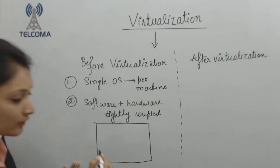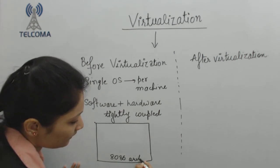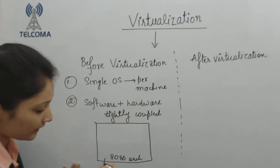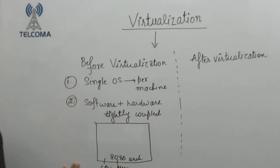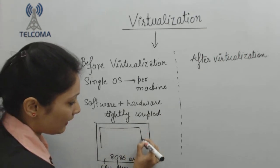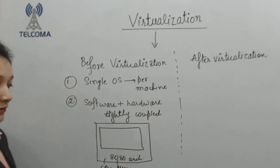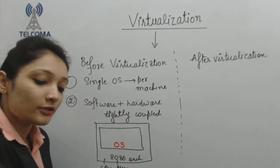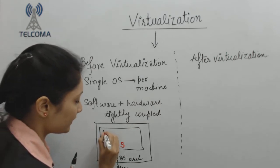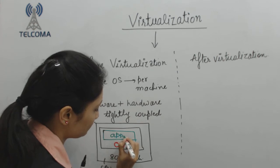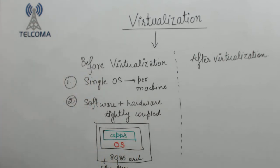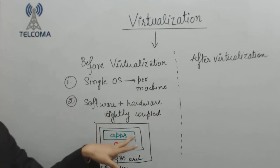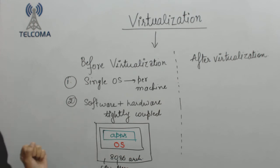In the before-virtualization architecture, you have your x86 CPU architecture with CPU, memory, network interface cards, disks, and everything. After this architecture, you have your operating system installed, and on top of the operating system you have the different applications. This is the scenario before virtualization: single machine, single operating system, software and hardware tightly coupled, and running multiple applications can create conflicts and slow down your system.